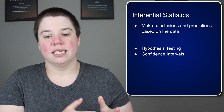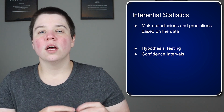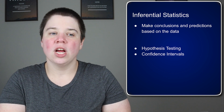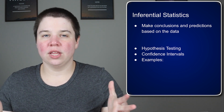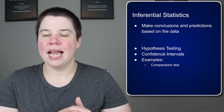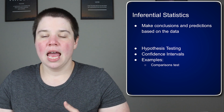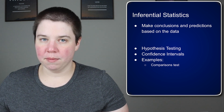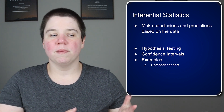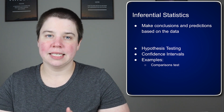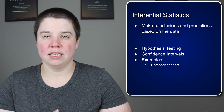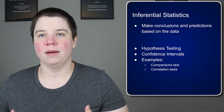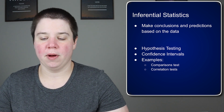We also use inferential statistics to get confidence intervals. A confidence interval not only gives us the average, but it tells us the range of that average at a given confidence level. Examples of inferential statistics include comparison tests — for example, a t-test comparing two different groups to see if the difference is statistically significant for the sample, which means it could be inferred upon the population.